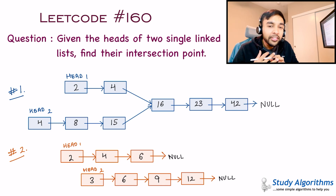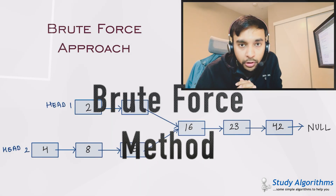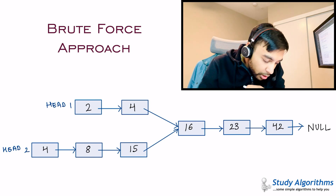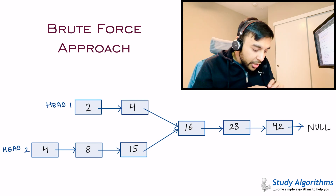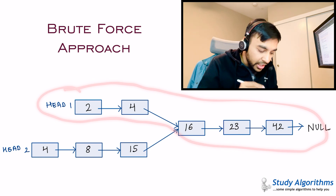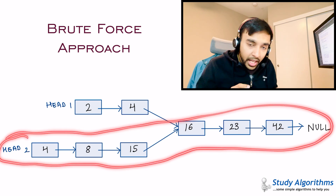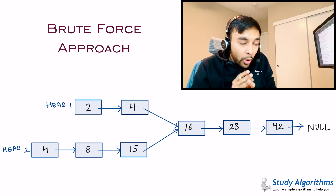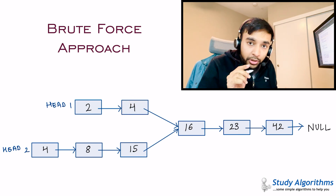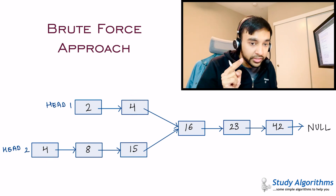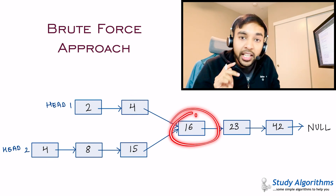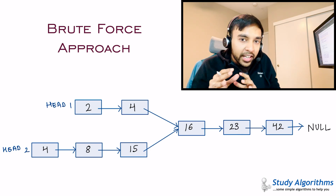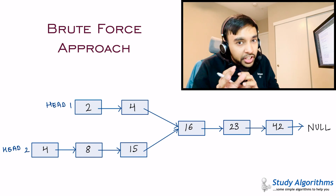A good developer always tries to come up with a brute force solution first, because a brute force solution can guarantee you if a solution to the problem exists. In this scenario, the intersection point can only be determined by the addresses of the nodes rather than the value. Even though the value 4 is the same in both lists, 4 is not the intersection point — 16 is. You need to find the intersection point based upon the address of these nodes, and these addresses could be anywhere in CPU memory, so they are pretty random.